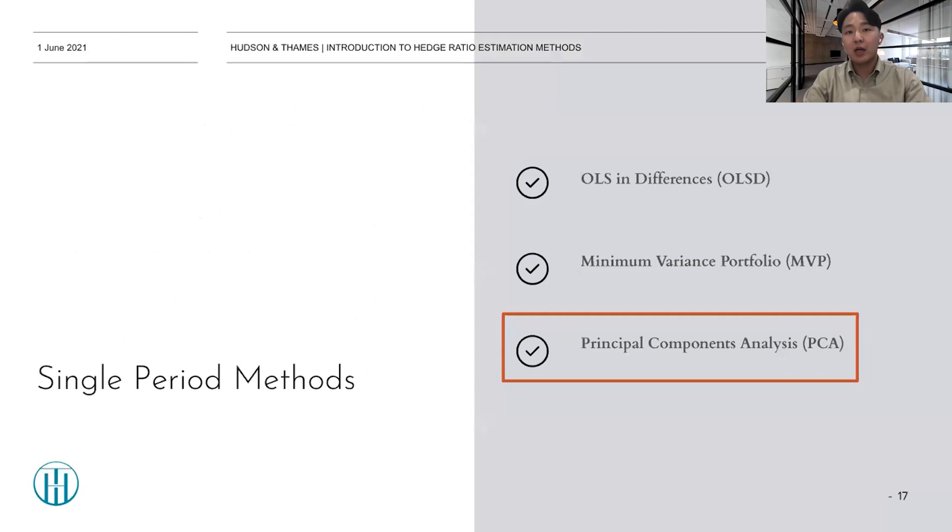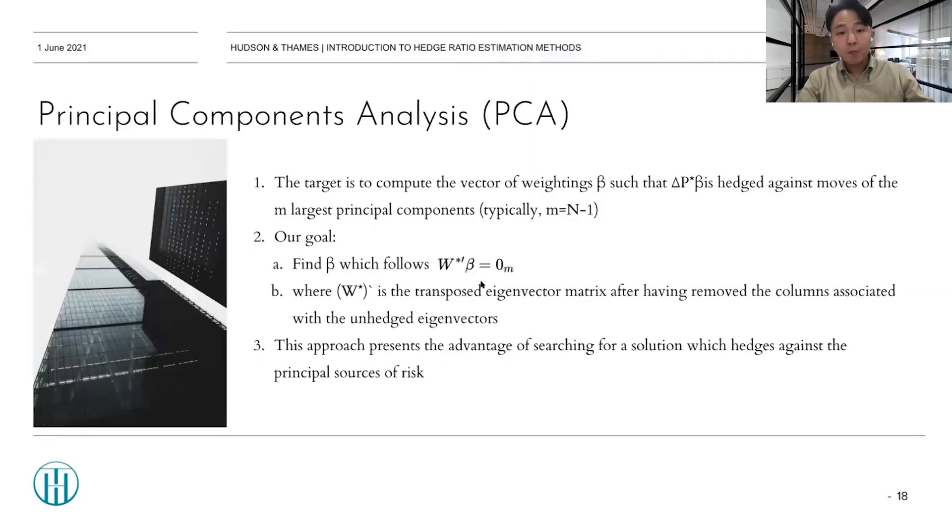The last method in single period is principal component analysis. Here, the basic settings are similar to MVP method. Delta P are assumed to be IID normal. And the target is to compute the vector of weightings beta, such that delta P times beta is hedged against moves of the M largest principal components, where M is typically N minus 1. So, the goal of this method is to find beta, which follows the equation in the slide, where W star transpose is the transposed eigenvector matrix after removing the columns associated with the unhedged eigenvectors.